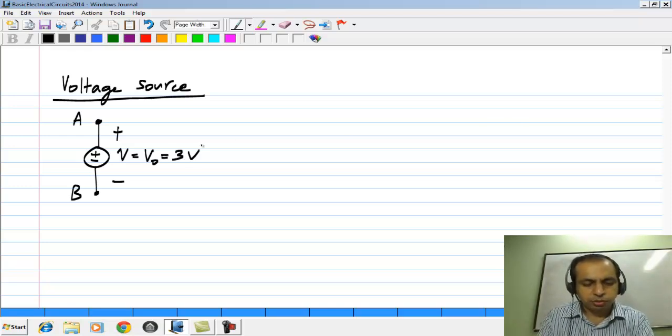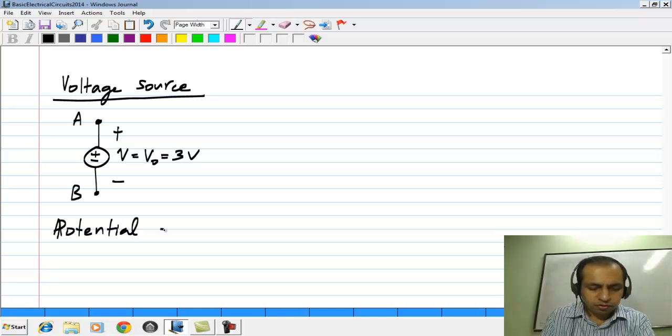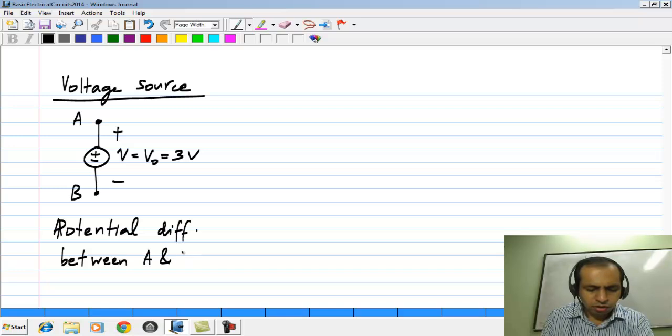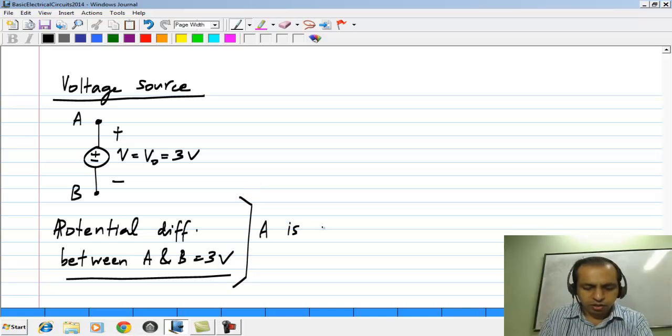Let us say for instance, let us take this to be 3 volts. What it means is that the potential difference between A and B is 3 volts, or more specifically point A is higher than B by 3 volts.